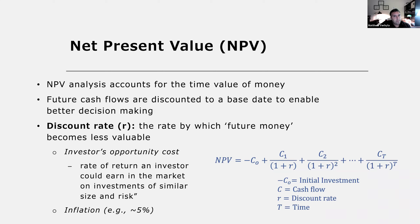Net present value, or NPV, analysis accounts for the time value of money. If we have a future cash flow — some cost or income incurred in the future — we have to discount it to a base date, often the present date, to enable better decision making. We use the discount rate R, which is the rate by which future money becomes less valuable, reflecting the investment's opportunity cost and accounting for inflation — for example, a discount rate of 5%.